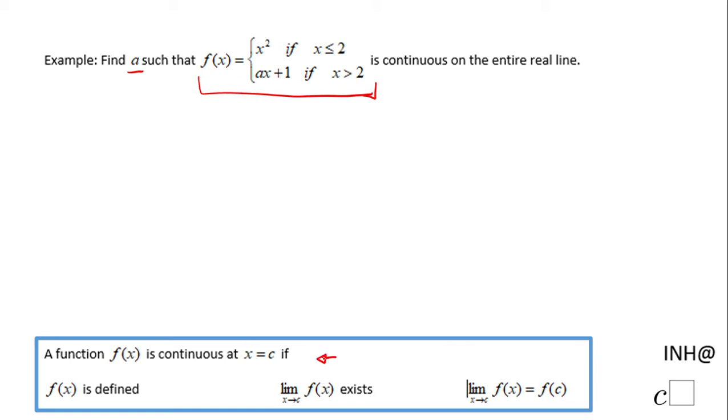I'm going to take a limit when x approaches 2. This is the moment where we really need to be aware if this function is continuous or not. Other than that, on the entire real line, the function will be continuous. So let's see what's happening at x equals 2.